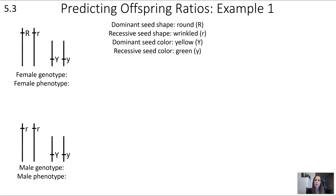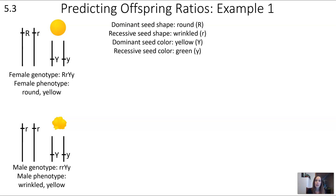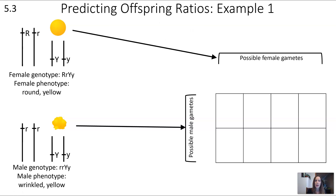Here's an example with pea plants looking at seed shape (round vs. wrinkled) and seed color (yellow vs. green). We have two parents: one acting as the female donating the egg and one acting as the male donating the sperm. The female genotype is RrYy, producing round yellow seeds because both round and yellow are dominant. The male genotype is rrYy, producing wrinkled yellow seeds because the male is homozygous recessive for seed shape.